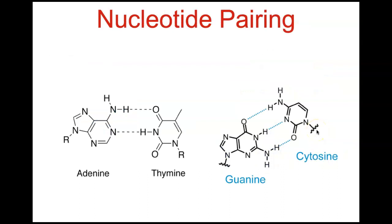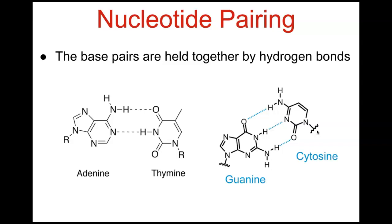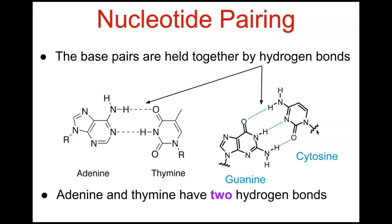When we look at nucleotide pairing, the pairs are held together via hydrogen bonds. Going back to basic chemistry: hydrogen bonds are the weakest bond type, while triple covalent bonds are the strongest. These weak hydrogen bonds electrostatically hold the two strands — the ladder — together to make up the DNA molecule. Between guanine and cytosine there are three hydrogen bonds, and between adenine and thymine there are two.